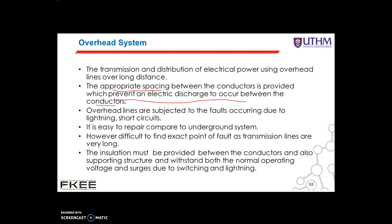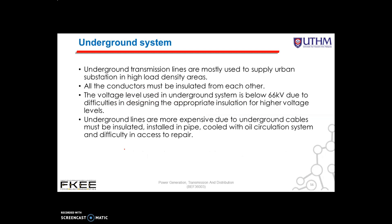Overhead lines are subjected to forces that occur due to lightning and short circuits. It is easy to repair compared to the underground system; however, it is difficult to find the exact point of fault as transmission lines are very long. Insulation must be provided between the conductors and the supporting structure to withstand both normal operating voltage and surges due to switching and lightning. Underground transmission lines are mostly used to supply urban substations in high load density areas — for example, Putrajaya.